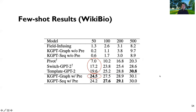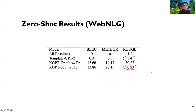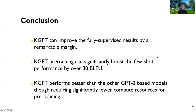We observe very strong results on the WikiBio dataset as well, consistent with prior results. In a zero-shot learning setting on WebNLG, KGPT achieves about 30 BLEU score versus a 3% baseline. To conclude: KGPT improves fully supervised results by a remarkable margin; KGPT pre-training boosts few-shot learning performance by as many as over 30 BLEU points; and KGPT performs better than other GPT-based models while requiring significantly fewer computing resources for pre-training.